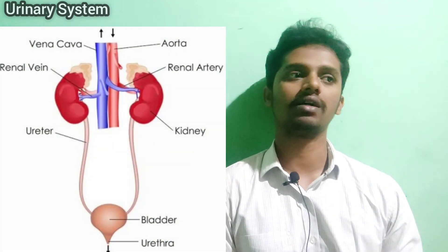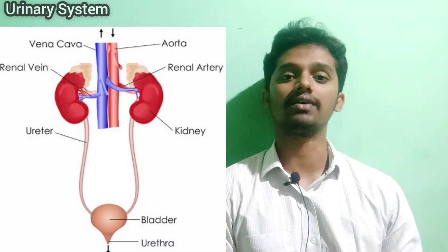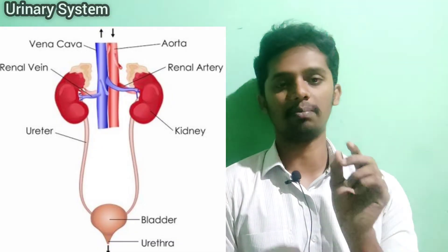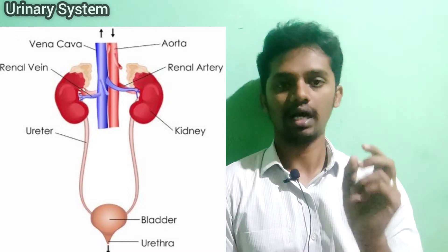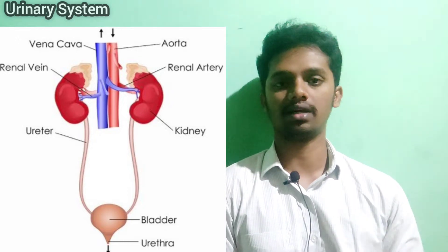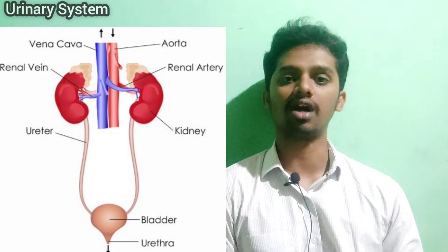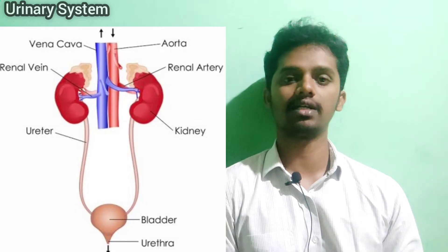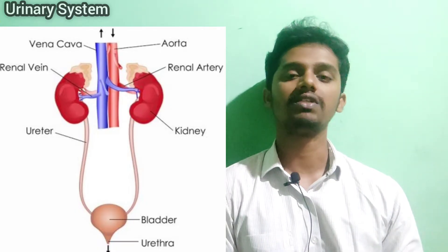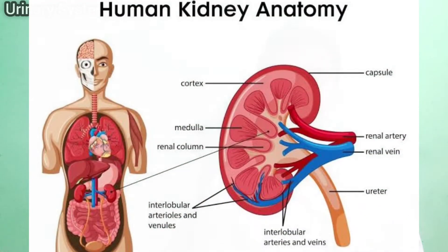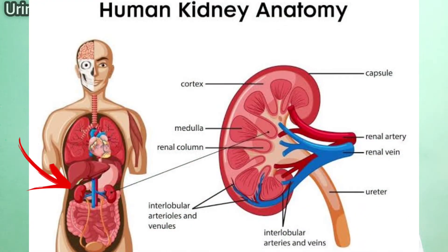Anatomy of the kidney. If you look at the kidney, it is a bean-shaped organ — everyone knows what a bean looks like. It is a small, dark red colored bean-shaped organ positioned in the retroperitoneal region.